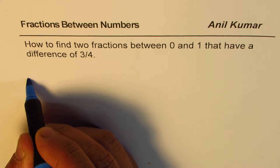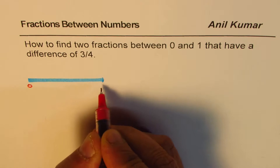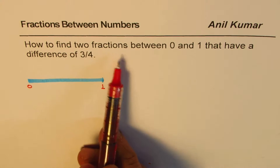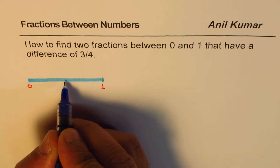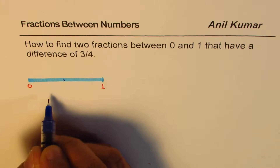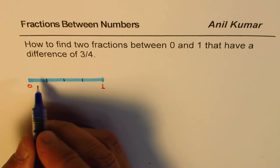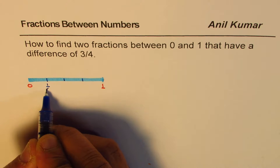Let us say this line represents 0 to 1. So this part starting is 0 and here we have 1. Now we need to find two fractions between 0 and 1 that have a difference of 3 by 4. Let's divide this line into equal parts. If I take the half and then divide it further into halves, I get 1 fourth. So from 0 to this place is 1 fourth.